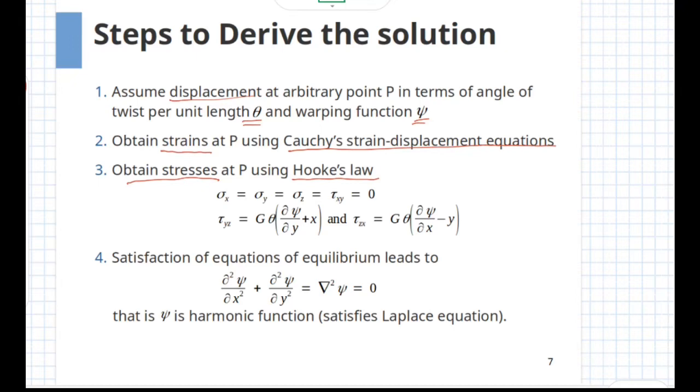After the application of generalized Hooke's law, one would find that the normal stresses sigma x, sigma y and sigma z as well as the shear stress tau xy are equal to zero. The value of shear stress tau yz and tau xz are given in terms of theta and psi as given by this expression.